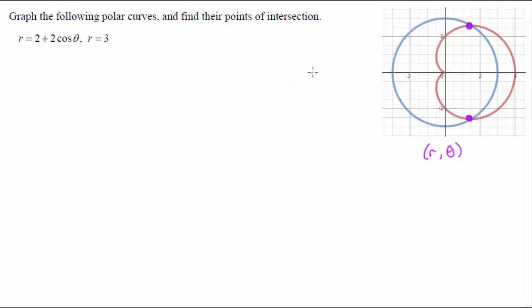To do that, it actually works the same way as it does with normal xy equations. We need to set these equal to each other to solve and figure out when these will be equal. So I'm going to set 2 plus 2 cosine theta equal to 3. And then I have a fairly normal, fairly simple trig equation to solve.